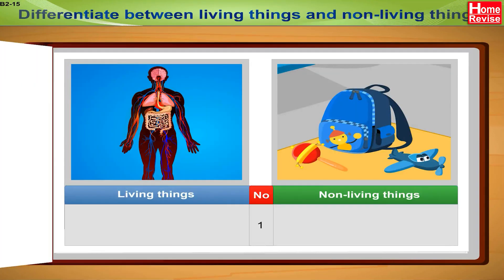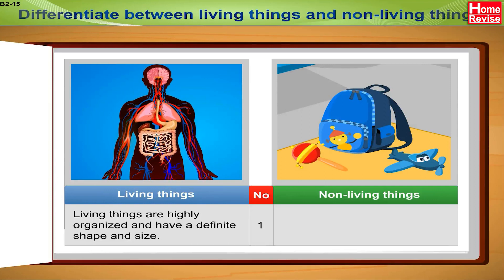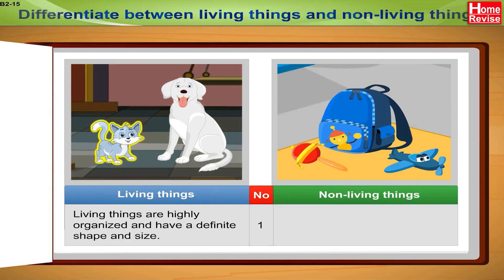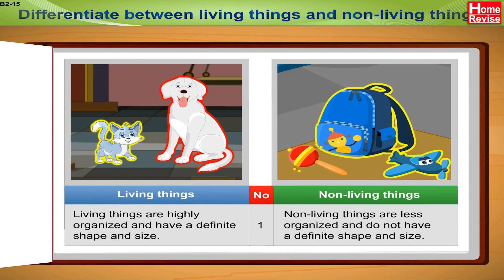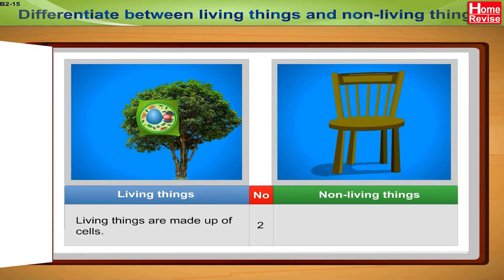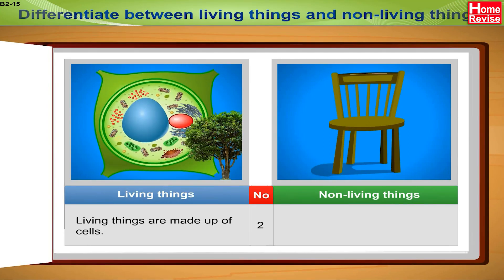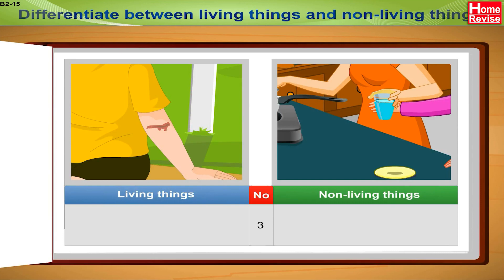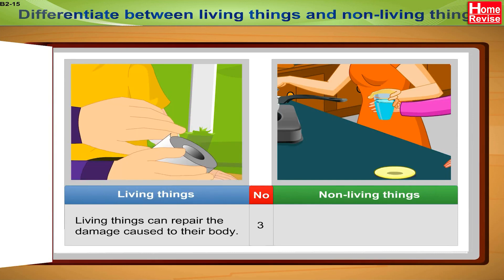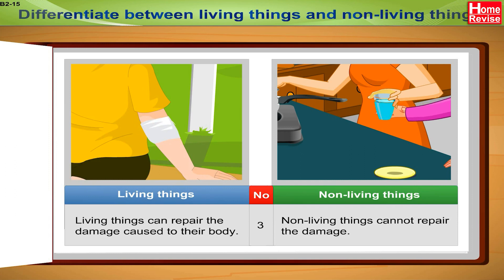1. Living things are highly organized and have a definite shape and size, while non-living things are less organized and do not have a definite shape and size. 2. Living things are made up of cells, while non-living things are not formed of cells. 3. Living things can repair the damage caused to their body, whereas non-living things cannot repair the damage.